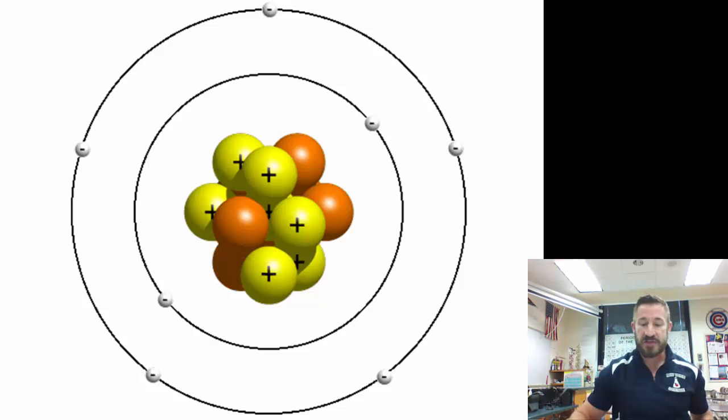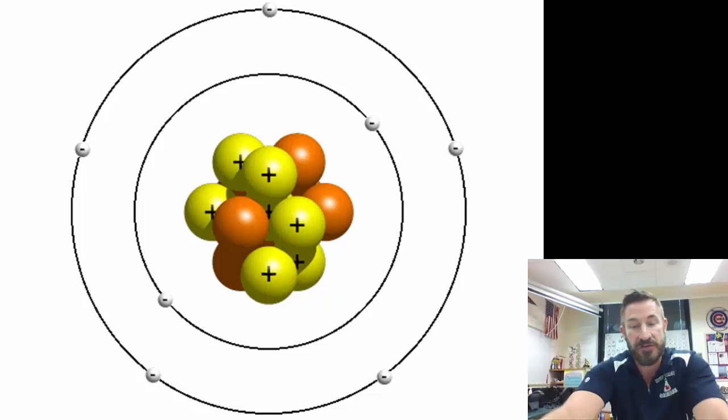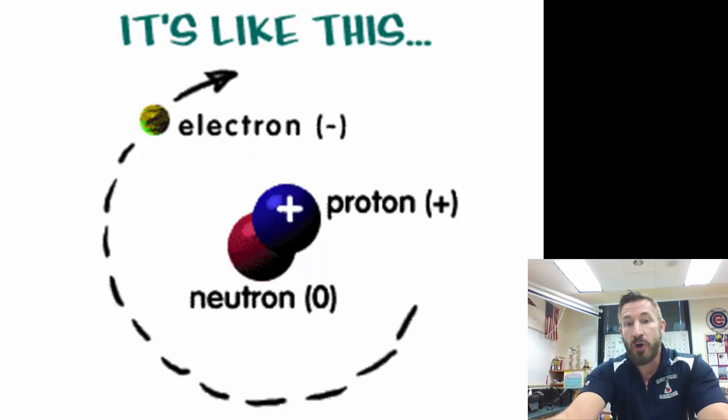Understanding the atom is key to understanding our physical world. There are over 100 elements that exist in nature and they all have unique properties. Atoms of elements react with one another to form virtually an unlimited number of compounds. Things we're going to look at in the atom: the proton, the neutron, and electron.